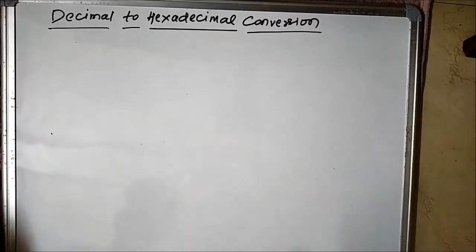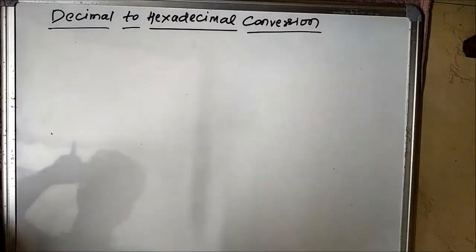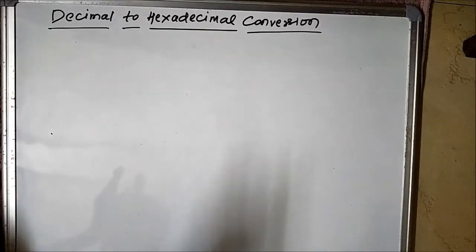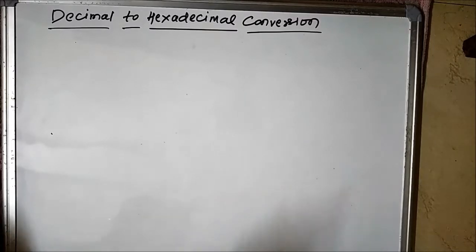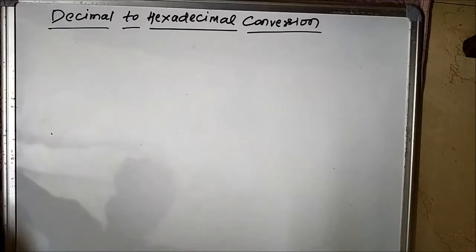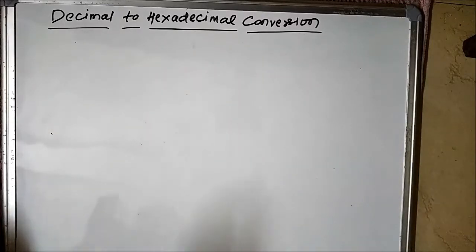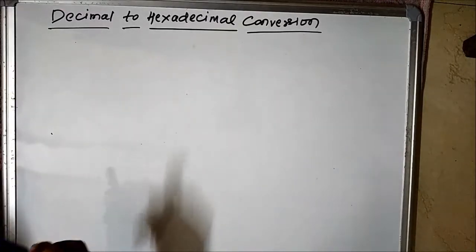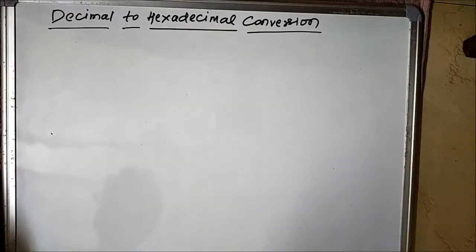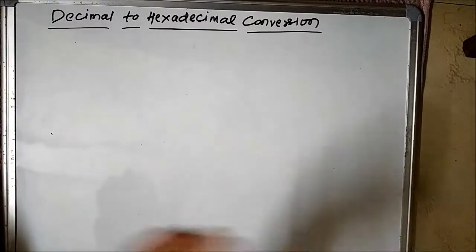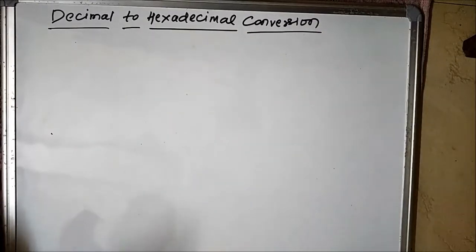Hello friends, welcome to Engineering Tutorial. Today we are going to discuss about the process of conversion of a decimal number into its hexadecimal form. So far we have discussed about the interconversion from decimal to binary and binary to decimal, decimal to octal and octal to decimal. And now we will go for the decimal to hexadecimal conversion, and then we will discuss the opposite: hexadecimal to decimal conversion.